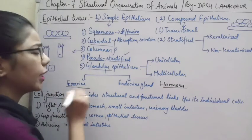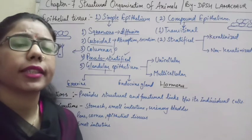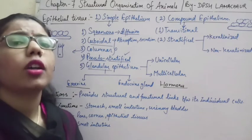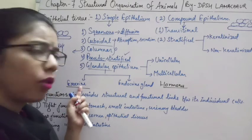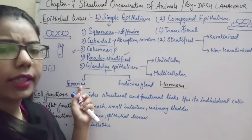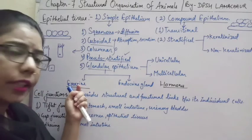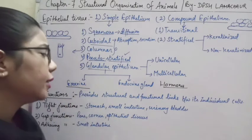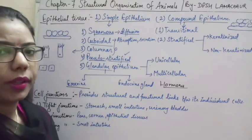Examples of exocrine gland secretions include milk, saliva, and oil — all of which require ducts. So we have covered glandular epithelium tissue. Now we move on to compound epithelium.